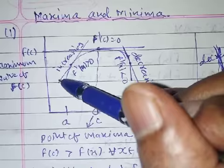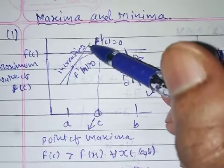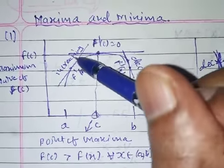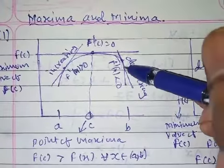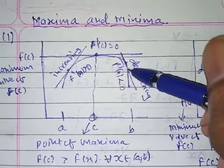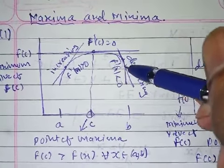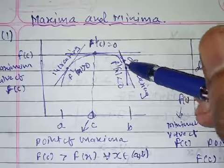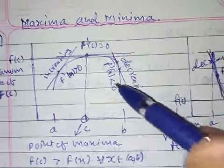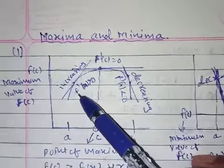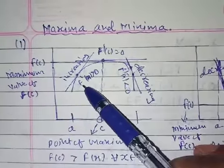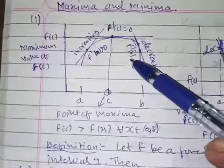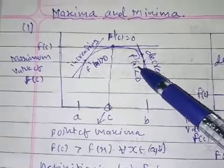If you take a point here and draw the curve, it is increasing — so it is an increasing function. Take another point b here. What is happening from here is it shows a decreasing function. For an increasing function, f'(x) is greater than 0, and for a decreasing function, f'(x) is less than 0.